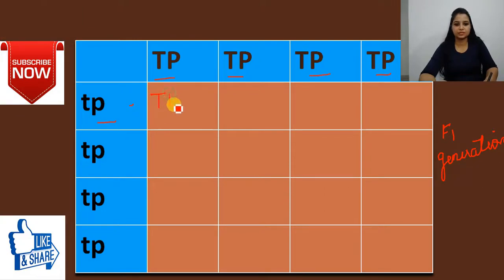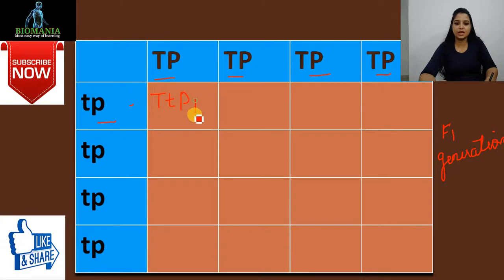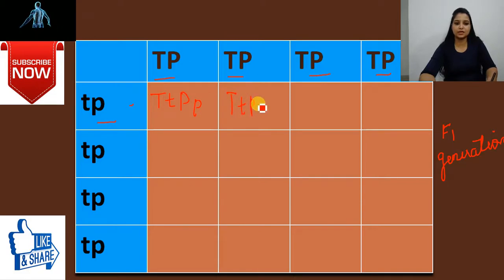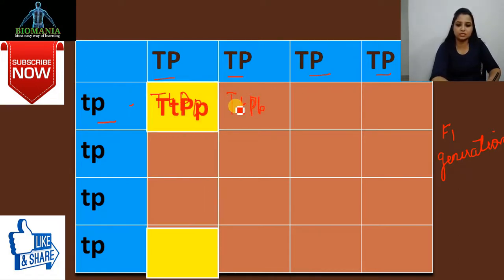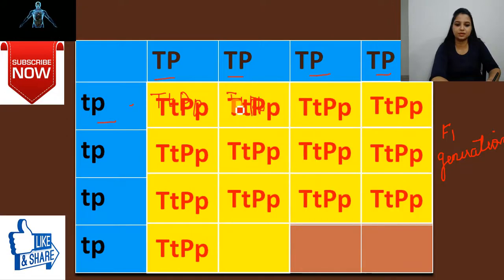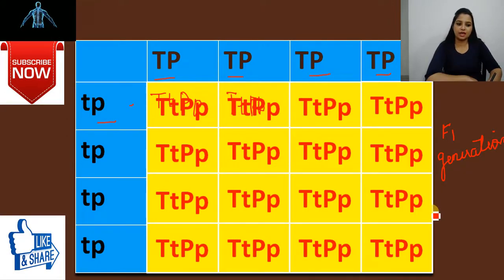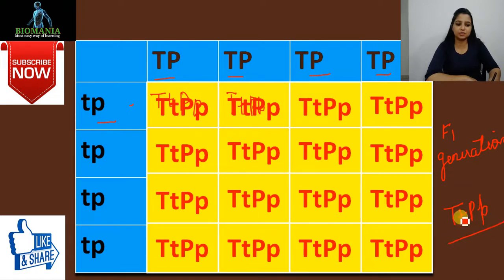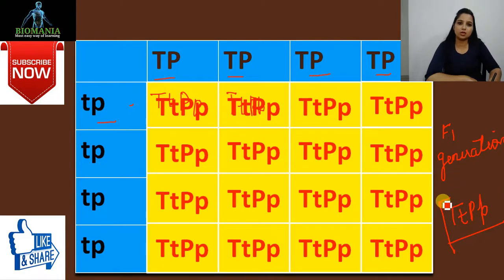So the F1 genotype is TtPp — capital T, lowercase t, capital P, lowercase p. You can see here that all 16 kinds of progeny from the cross are having the same genotype: TtPp. This is the actual F1 generation which we obtained.